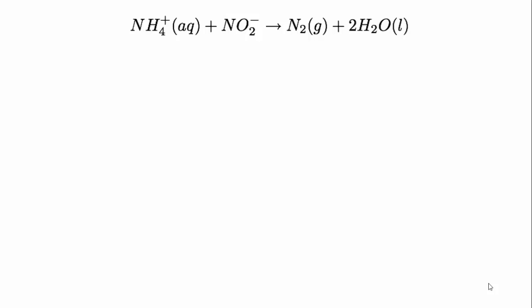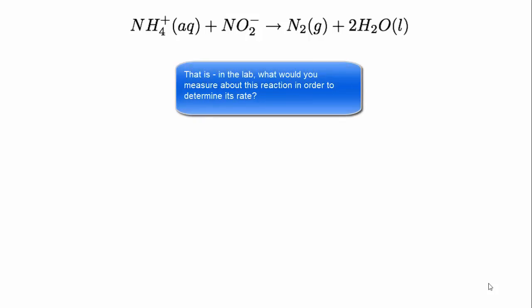In order to determine the rate law for this reaction, a chemist would do a series of experiments varying the concentration of the ammonium and the nitrite separately, and measuring the rate of the reaction, just as we varied the length and the width of the prism and measured its volume. And here's a question for you to think about. For this particular reaction, what would be a suitable experimental method of measuring the rate?